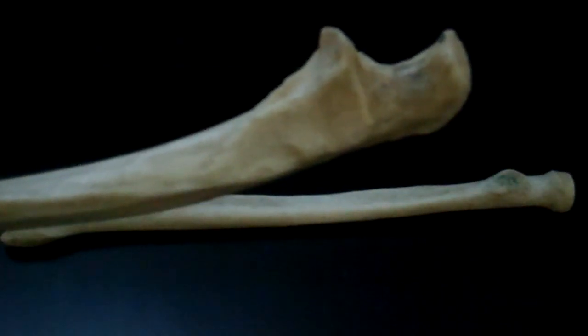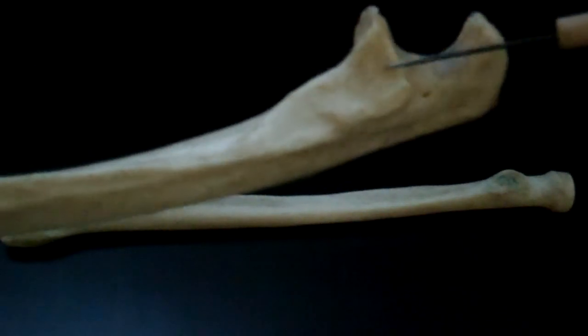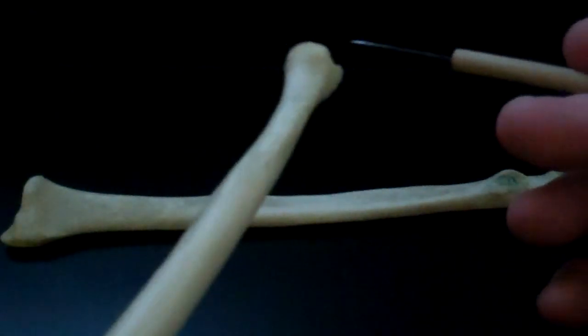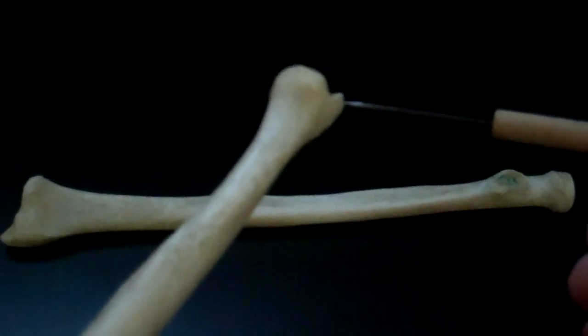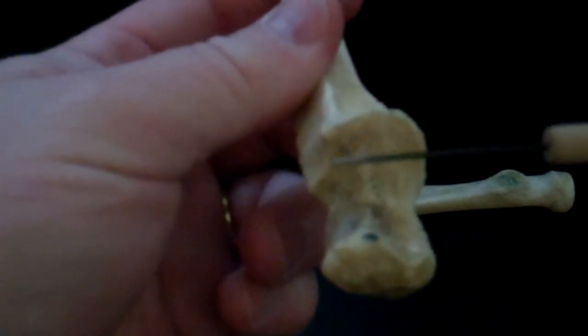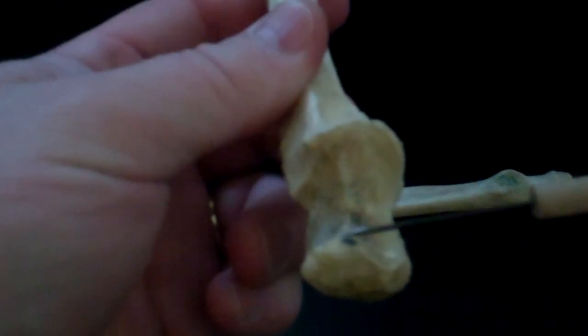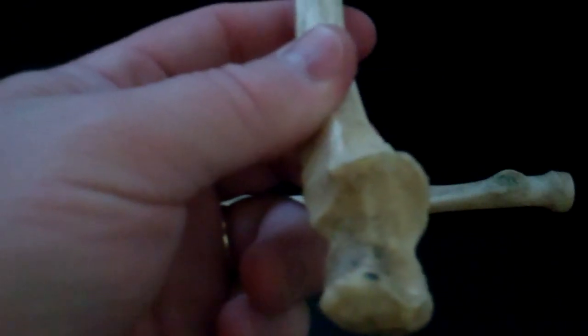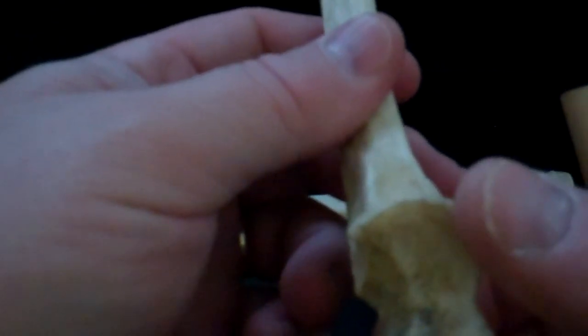The head of the radius or crown of the radius will fit neatly into this round notch. This is the radial notch on the ulna. The styloid points to the little finger when the olecranon process and the semi-lunar notch or trochlear notch is up. This is a left ulna.